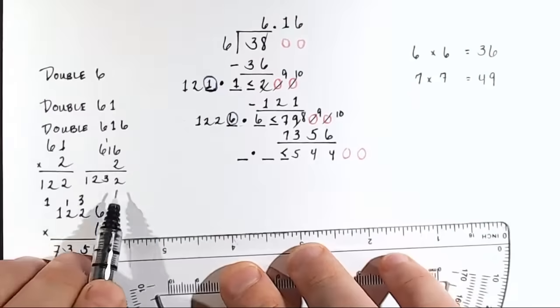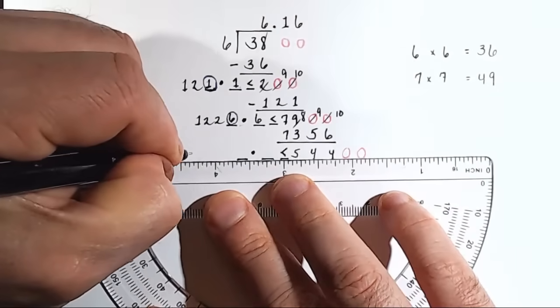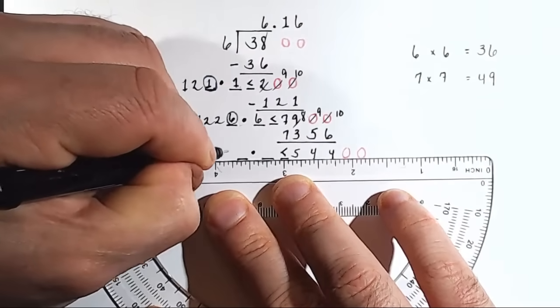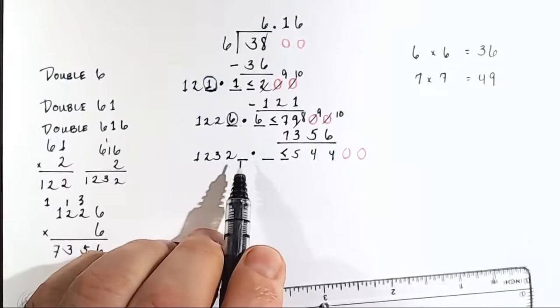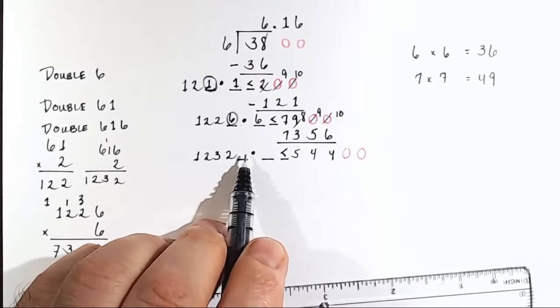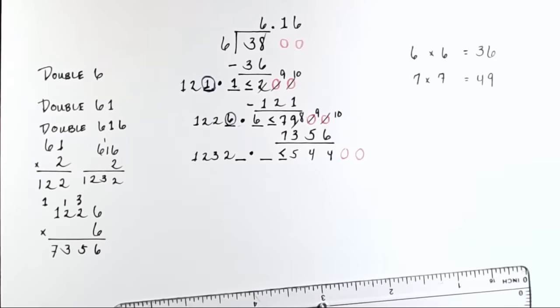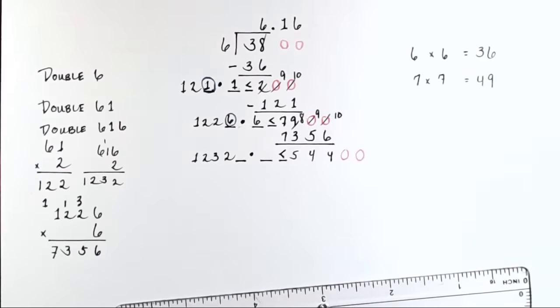Or rather, 1, 2, 3, 2. Okay? We would write 1, 2, 3, 2. And we would be looking for that final digit. This is getting big. Right? It gets, the problem itself gets big. So we'll just stop at 6.16. And this is the cool thing.